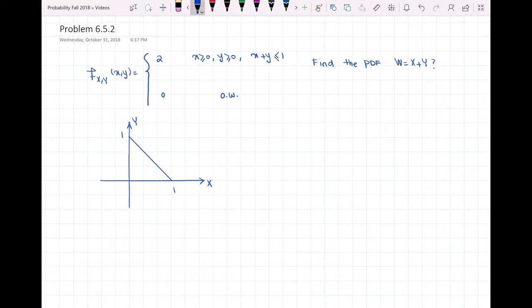The key to finding the solution is first we have to draw the region in which the PDF of X and Y is non-zero. This line you can see here represents X plus Y equal to 1, and the region inside this triangle is X plus Y less than or equal to 1.